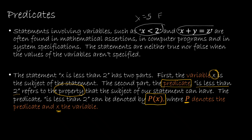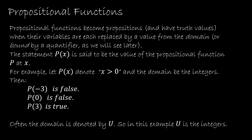Notice the way we're going to write this — it should look very familiar to you. This looks like a function, and that's correct. This is a propositional function. A propositional function can become a proposition — and have a truth value — when its variables are replaced by a value from the domain, or bound by a quantifier, which we'll talk about in the next video.